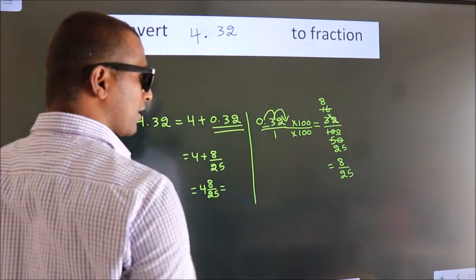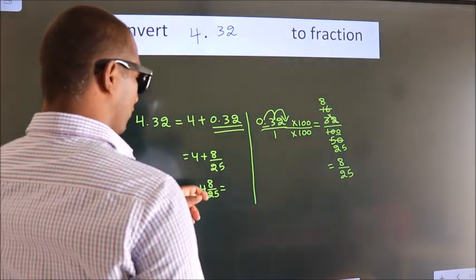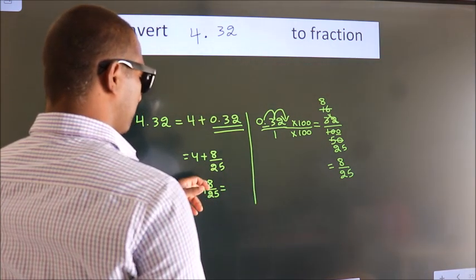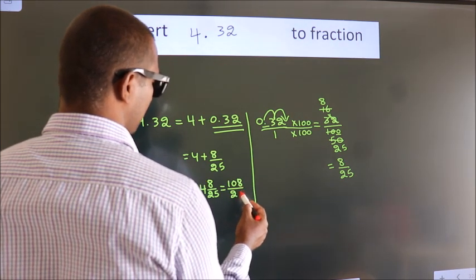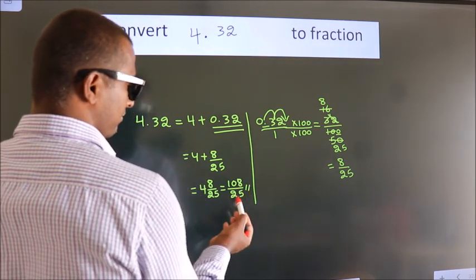And in improper fraction it is 4 into 25, 100 plus 8. 108 by 25 is our fraction.